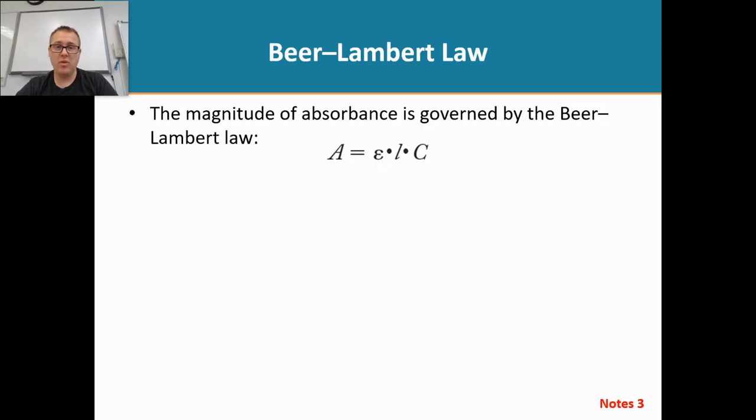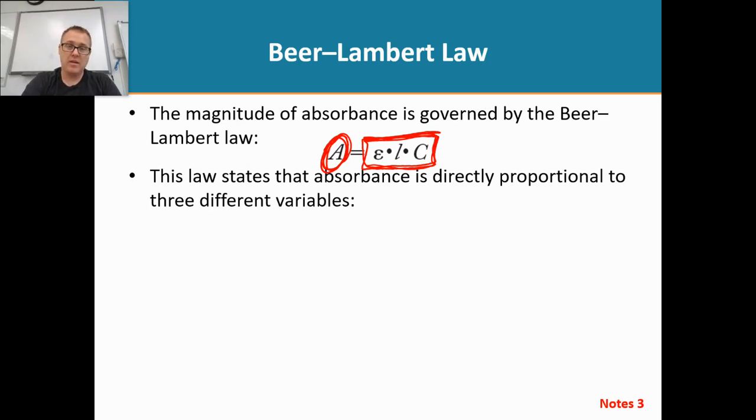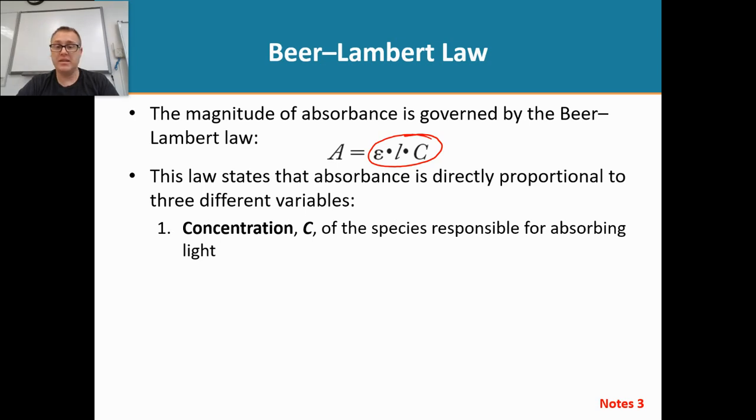As I mentioned before, one major purpose of UV-Vis is to calculate concentrations of unknown solutions. To do that, we need to understand the Beer-Lambert Law, which tells us that absorption equals these three terms. This law is telling us that absorbance is directly proportional to those three variables. The capital C is the concentration of the analyte in the solution, and the concentration of the analyte is going to affect how much light is going to be absorbed.